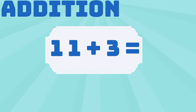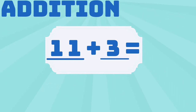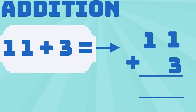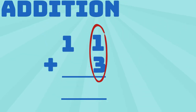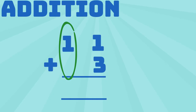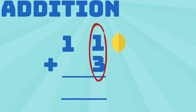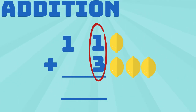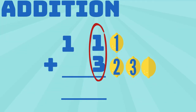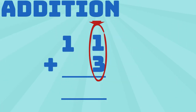Let's now calculate 11 plus 3. 11 is 2-digit while 3 is 1-digit. It can also be written with 11 on the top and 3 under the 1. You start by calculating 1 plus 3. 1 lemon plus 1, 2, 3 lemons equals 1, 2, 3, 4. That means 1 plus 3 equals 4.